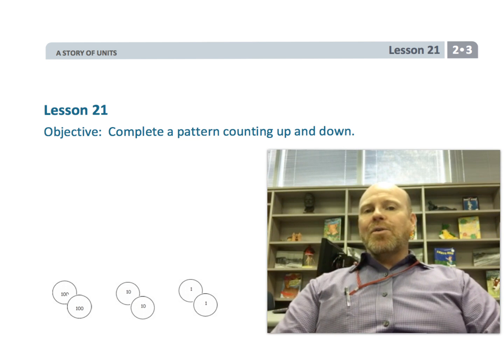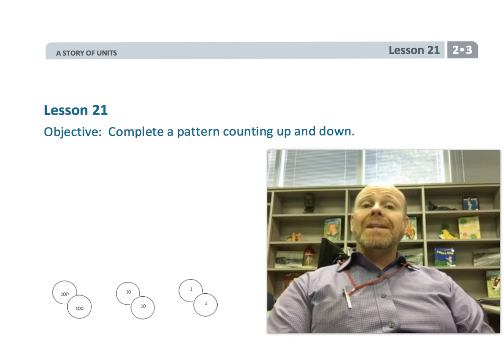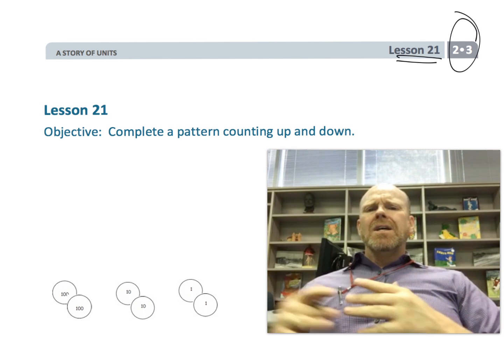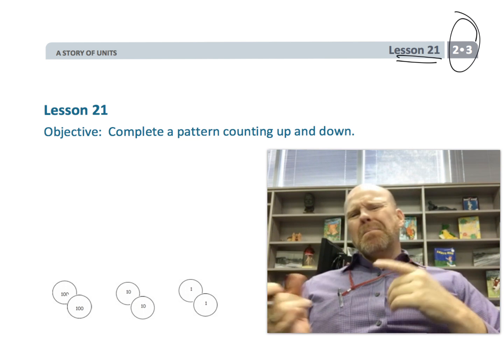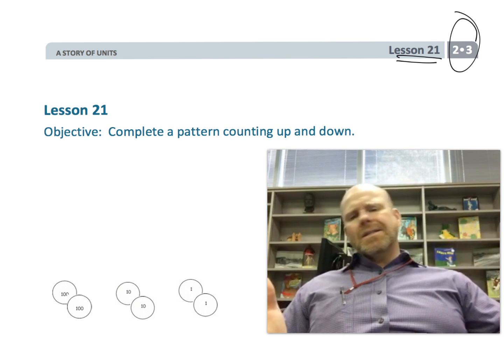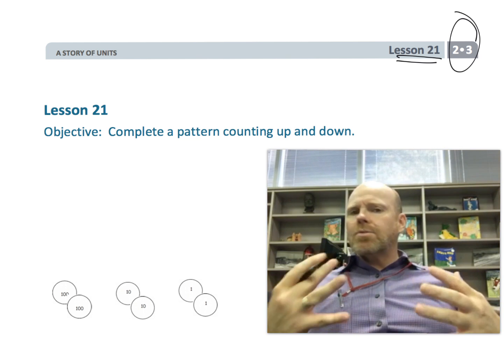Alright, this is second grade, module 3, lesson 21, and in this lesson, students are just going to be using everything they've been learning in the previous 20 lessons about place value and counting, crossing over the 100, crossing down past the 10, all that sort of stuff.